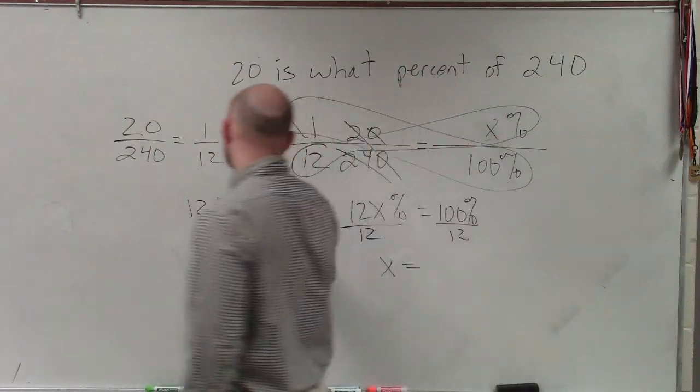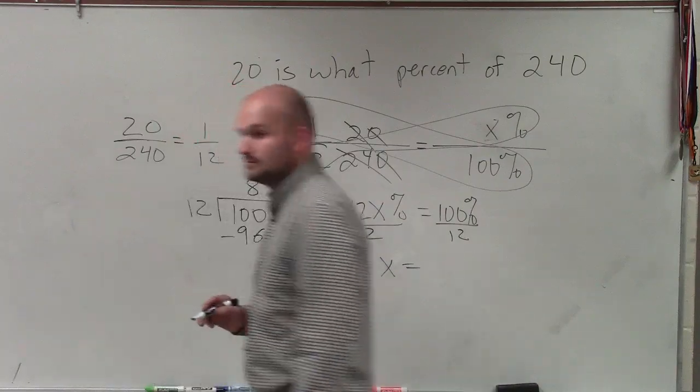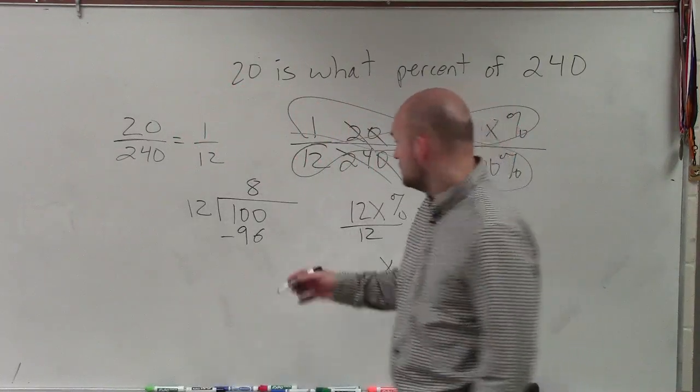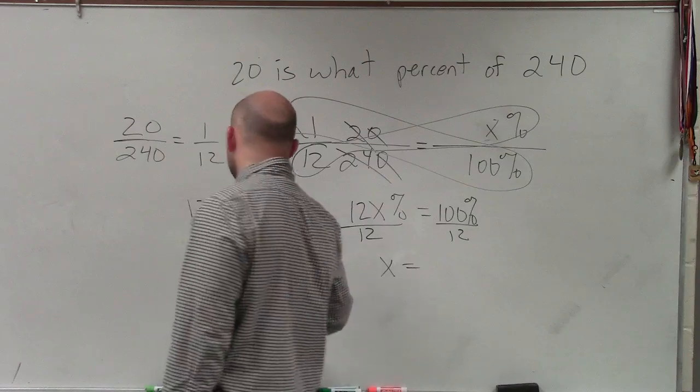8 times. 8 times 12 is 96, correct? Subtract the two rows, 4.